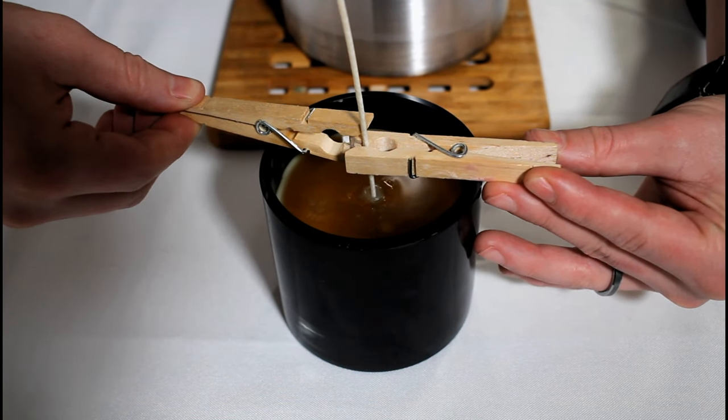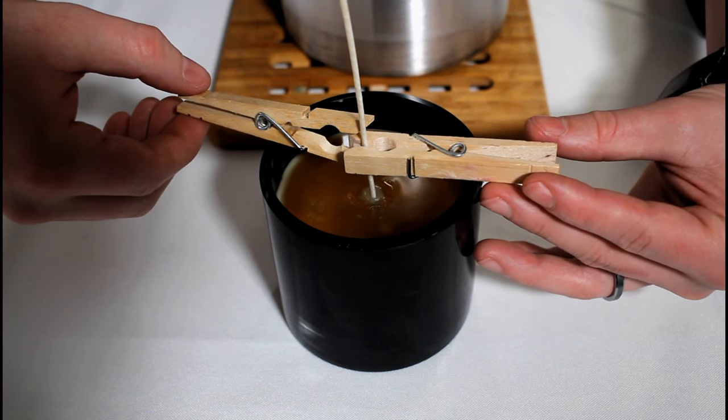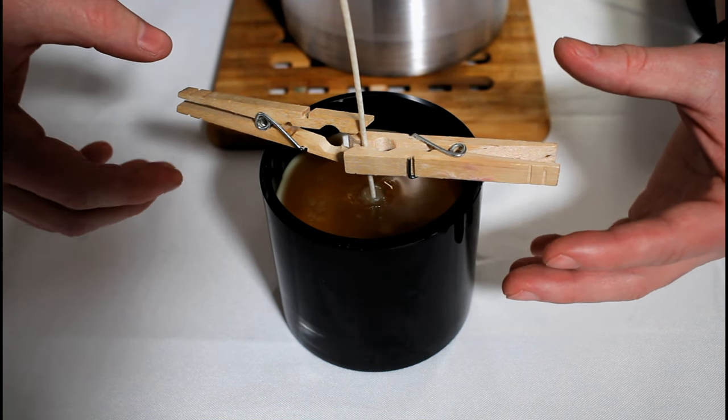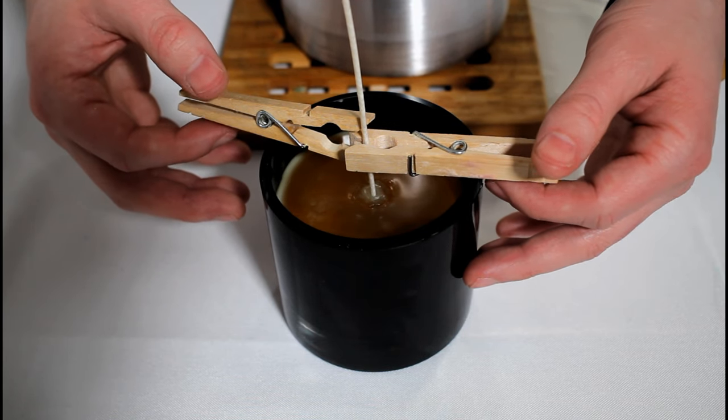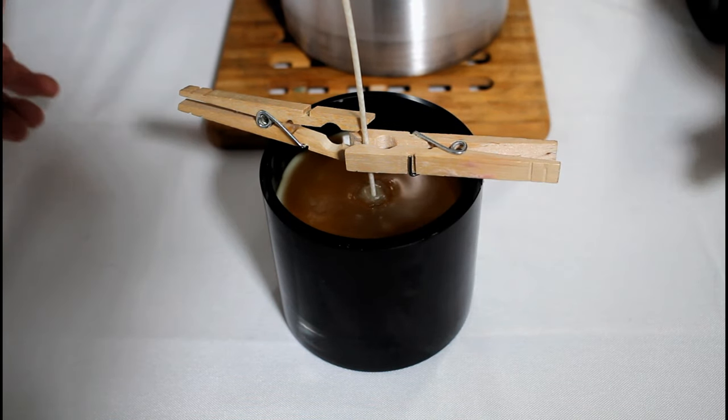I'm gonna re-secure the wicks just to make sure that we're centered before we leave it sit for five hours to get that initial hardening out of the way. Melt point of 137 degrees on this wax so it's gonna go fairly fast.